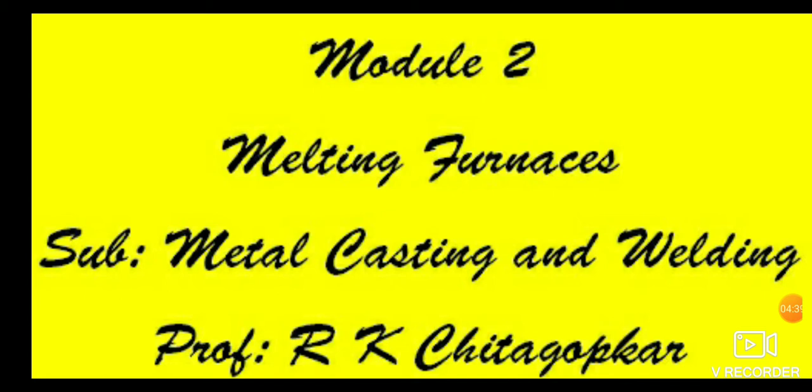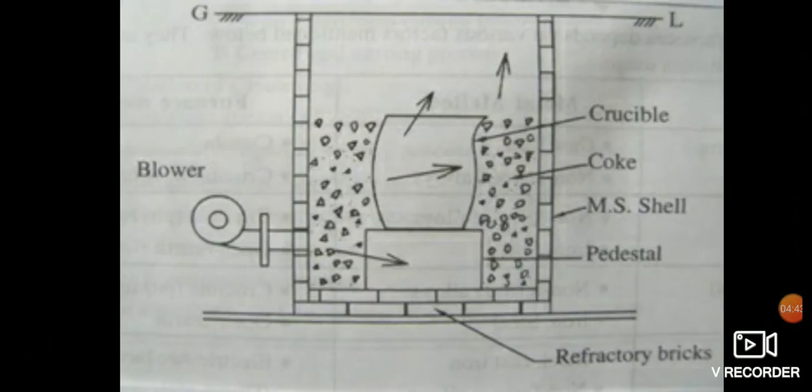You can see in the picture, in this we melt the metal without direct contact with a burning fuel mixture. For this reason they are sometimes called indirect fuel fired furnaces. Crucible furnaces are mostly used for melting non-ferrous metals and alloys. The metal is melted in a crucible, which is a refractory vessel made of silicon carbide or some other refractory materials.